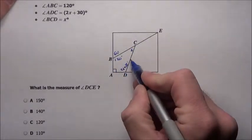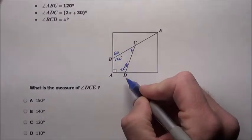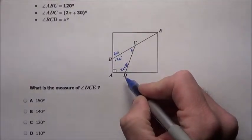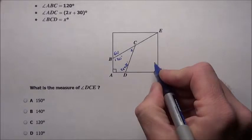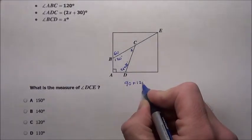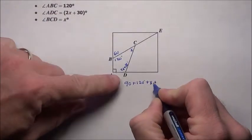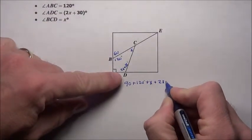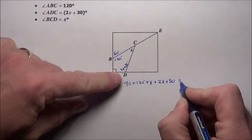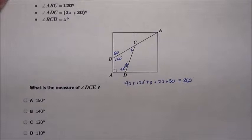I notice that this closed-in shape here is a quadrilateral with four sides. All quadrilaterals add up to 360 degrees. So I know this 90 plus the 120 plus the x plus this corner here, which was 2x plus 30, has to add up to 360 degrees.